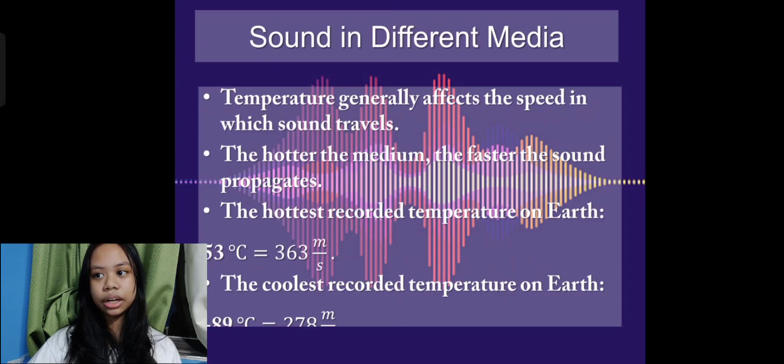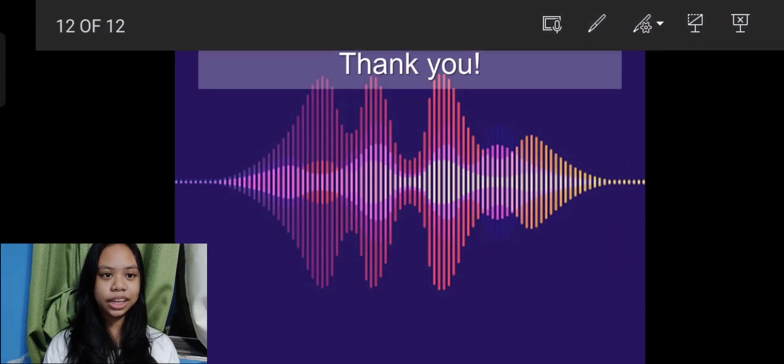On the other hand, the coldest temperature recorded is negative 89 degrees Celsius. At this temperature, the sound will travel at around 278 meters per second. That's a difference of 85 meters per second, which is typically the speed of a speeding car in a highway. That's all. Thank you.